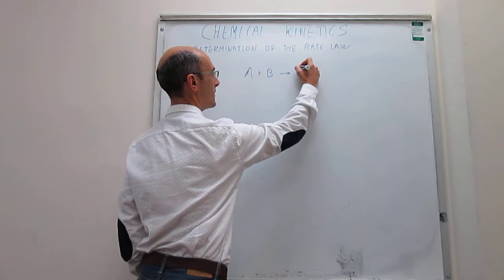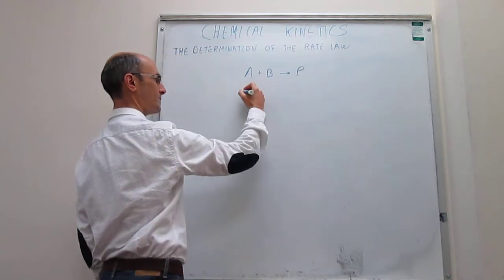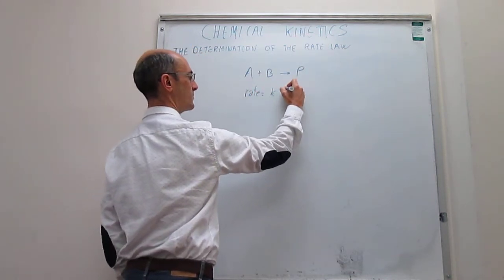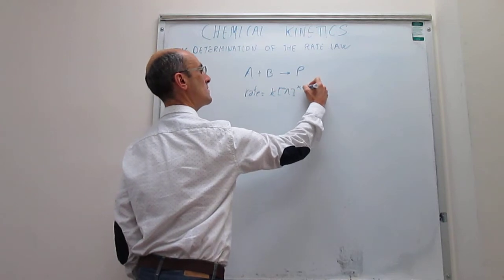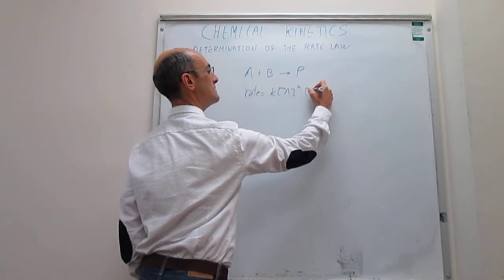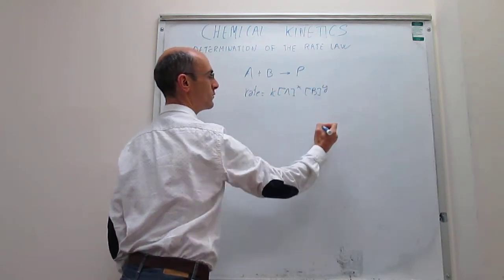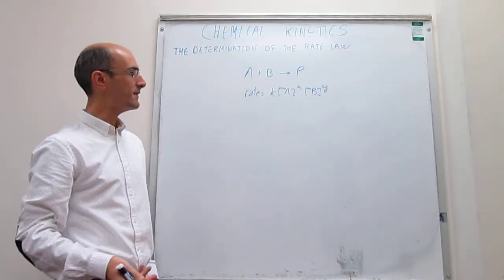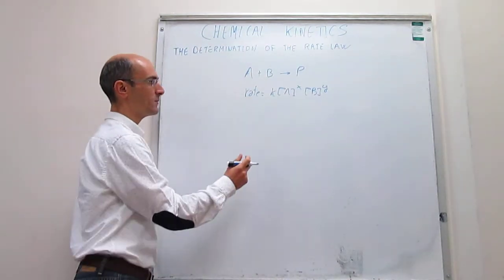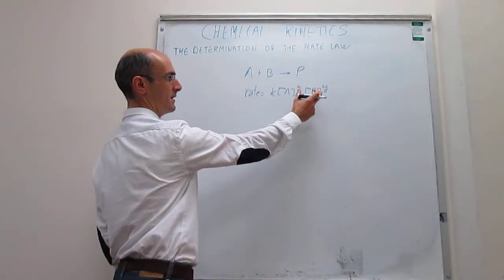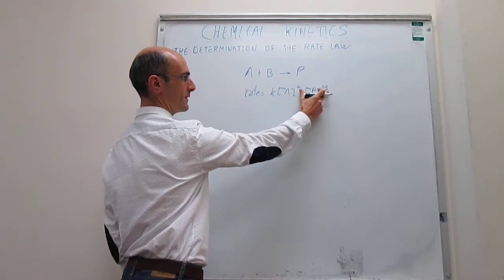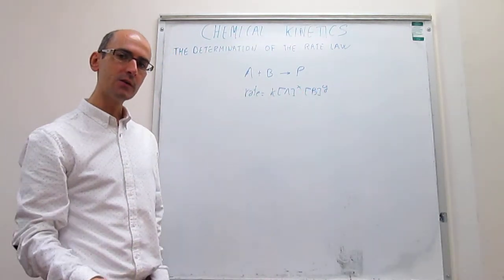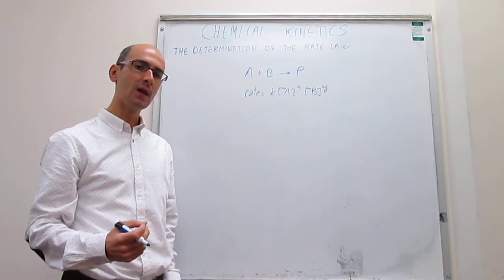So when we write the rate law, we have to write something like a generic rate law where K is equal to the rate expression. The idea here is to determine what the rate constant is, and then to determine the orders with respect to all of the reagents. So the question is, how do we do this?